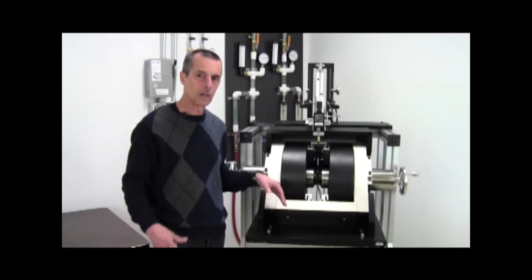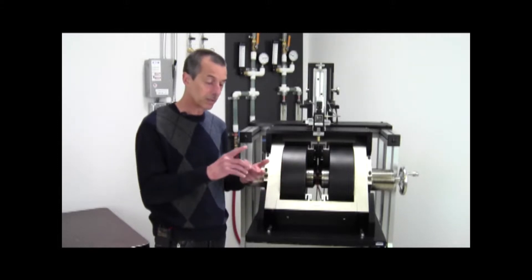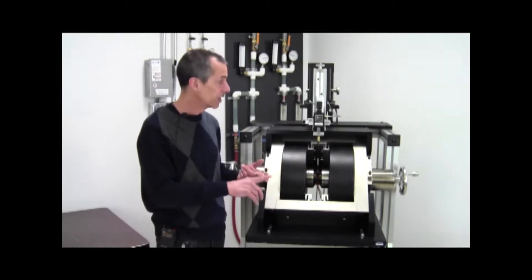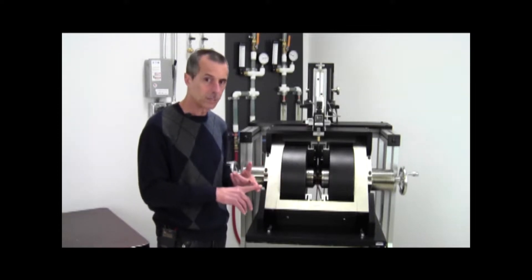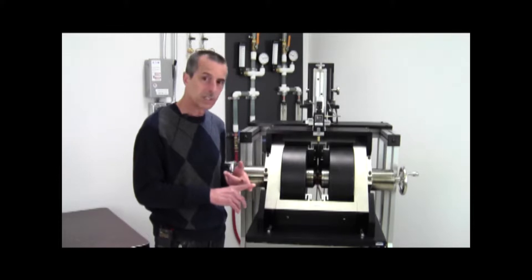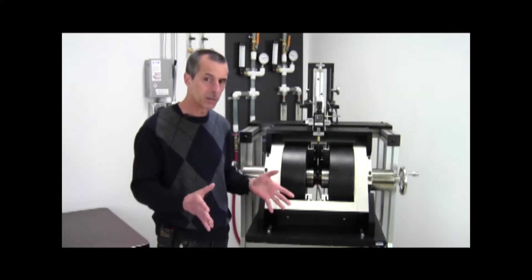A couple of very unique features about the Micromag Magnetometers are sensitivity and measurement speed. The VSM sensitivity or noise floor is about 0.1 micro-EMU. The AGM sensitivity is better than 10 nano-EMU, so it's a very, very sensitive magnetometry technique.